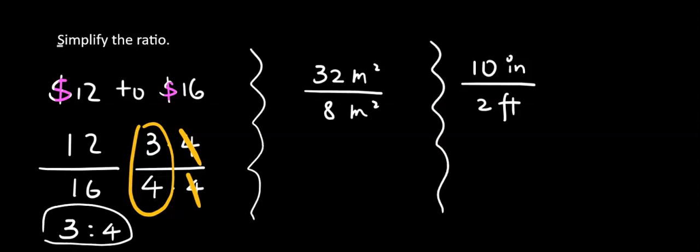We're going to first check the units. Units said square meter, square meter. That's all good. And let's look at 32 is 4 times 8. And 8 is 1 times 8. 8 divided by 8, that is 1. And we have 4 to 1.